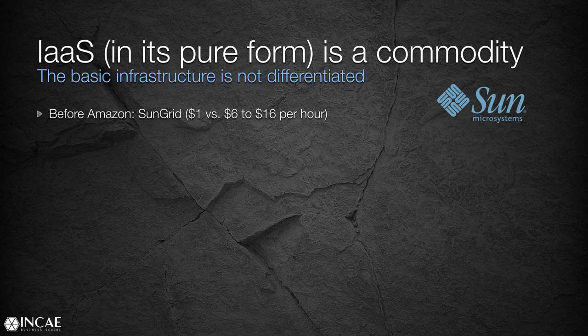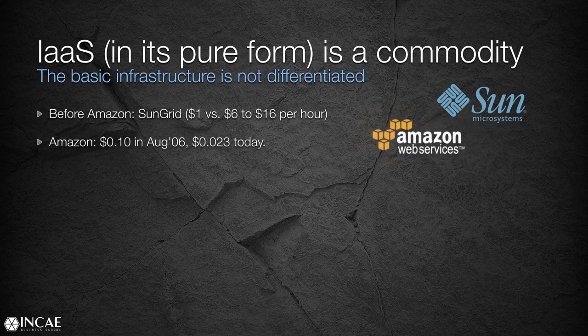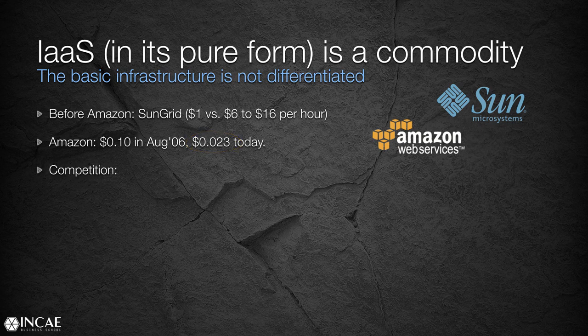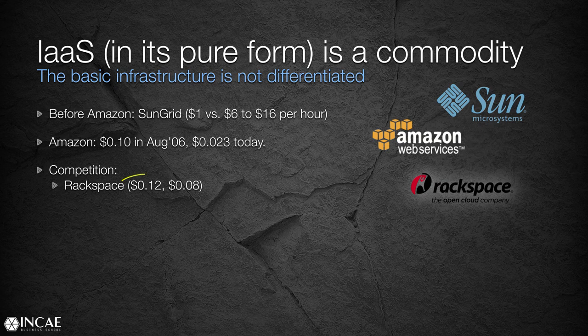A few years later, back in March 2006, Amazon came out with their offering. They launched their Simple Storage Service in March 2006 and their EC2 server instance offerings in August 2006. Their price back in August 2006 was merely 10 cents per hour — a tenth of Sun Microsystems. Nowadays, for that same server — a Linux server with two gigs of RAM — it costs around 2.3 cents per hour. When Rackspace launched its Rackspace Cloud Suite back in October 2008, they started charging 12 cents per hour, slightly above Amazon's 10 cents, mainly because they offered lots of support along with their servers.